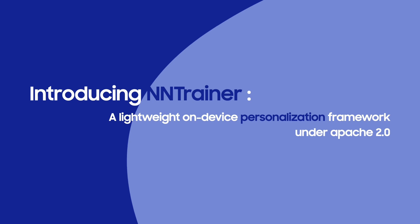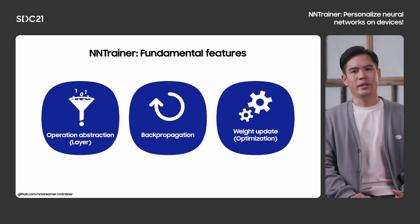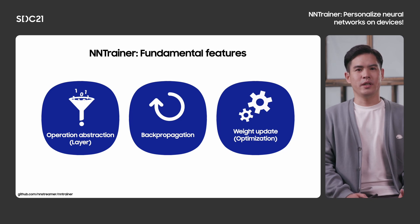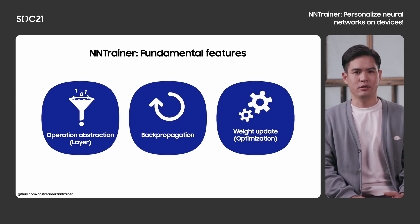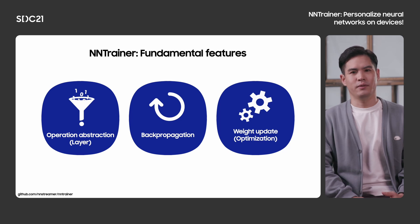So, we are introducing NN-Trainer — a lightweight on-device personalization framework under Apache 2.0. NN-Trainer is basically a deep learning framework based on neural networks like PyTorch or TensorFlow. It has the basic features other frameworks have: we support operation abstractions, which we call layers, back propagation, and model parameter updates through optimizers.